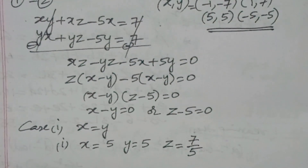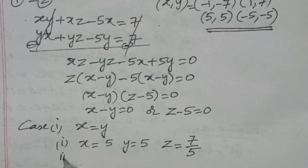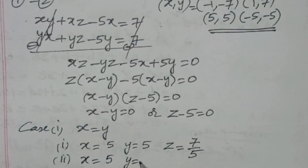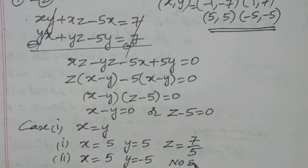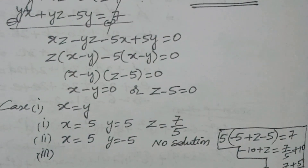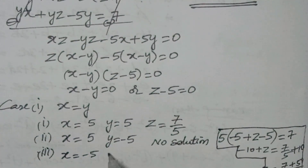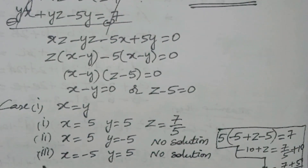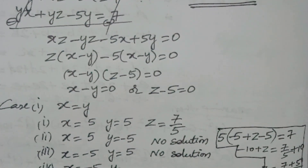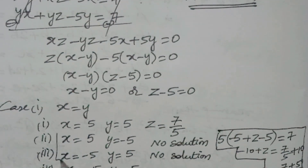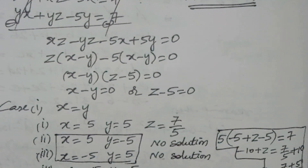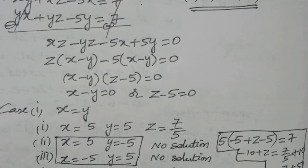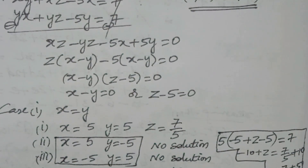Substituting x = 5, y = 5 gives z = 7/5. Second sub-case: x = 5, y = −5 — no solution since x ≠ y. Case 3: x = −5, y = 5 — also no solution. Sub-case 4: x = −5, y = −5. Substituting gives −5(−5 + z − 5) = 7, so z = 43/5.